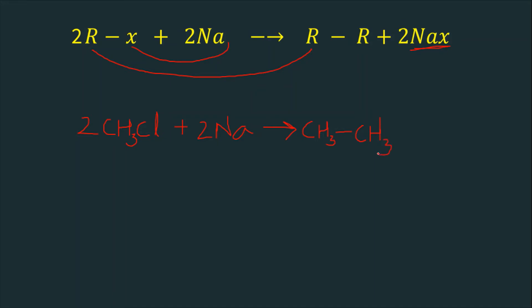This is a higher alkane and a byproduct as 2NaCl. We are using chlorine, so we are getting a byproduct as NaCl. Another example: if you take bromide in place of chloride, we'll get 2NaBr, sodium bromide, but the alkane is the same. We are using methyl chloride and we are getting ethane.